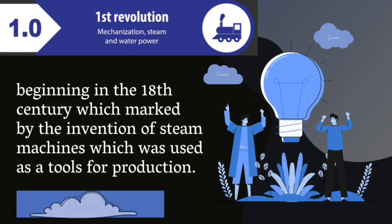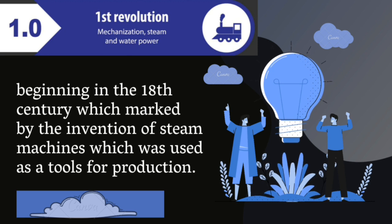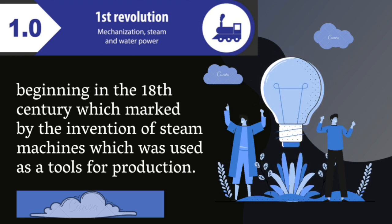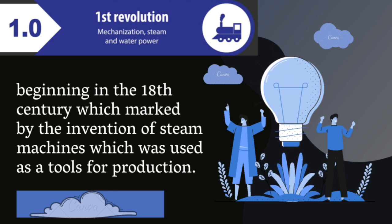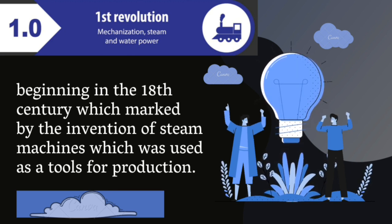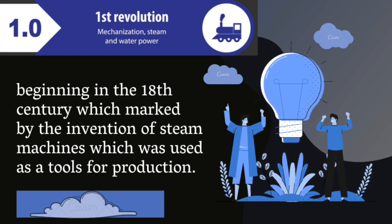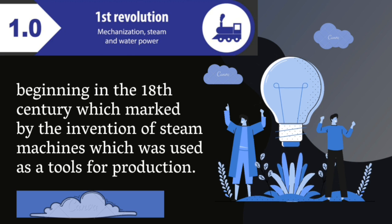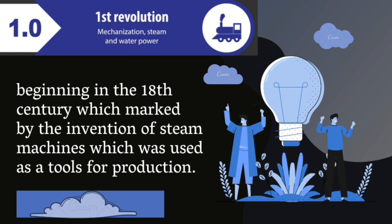The first industrial revolution (1.0) took place in the 18th century, marked by the invention of the steam engine which was used as a tool for production. The steam machine was first used in the UK by a textile factory to increase the productivity of the textile industry. Before this era, production still relied on human and animal labor and only produced a few items each day.